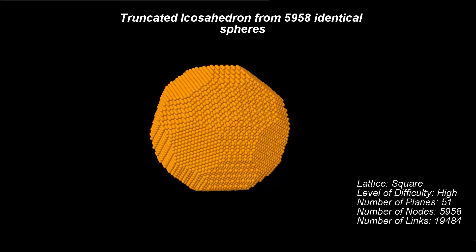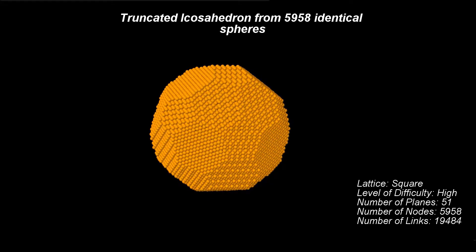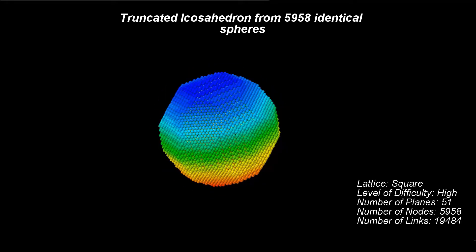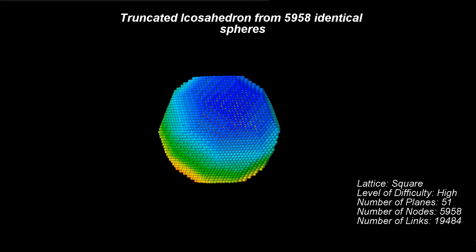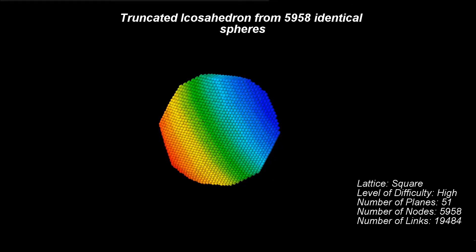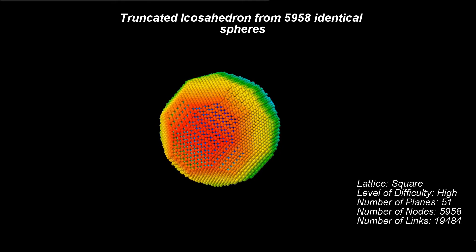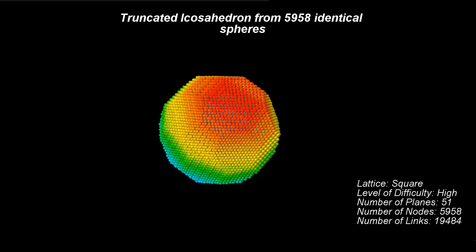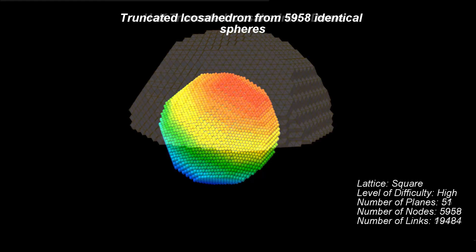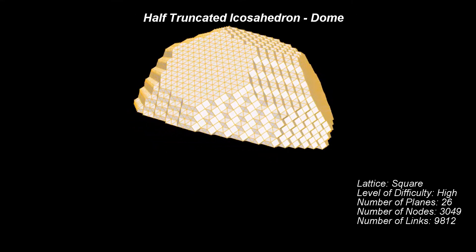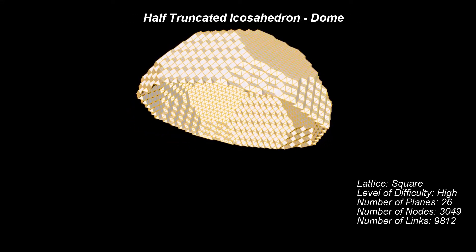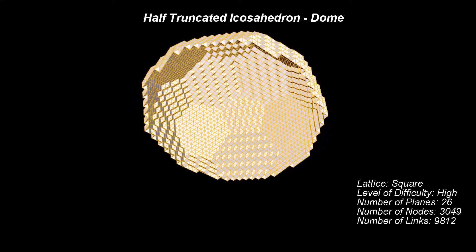By taking only half of this pattern, we are left with a nice dome. Don't forget, this dome can be constructed using only 2 types of elements: identical nodes and identical struts.